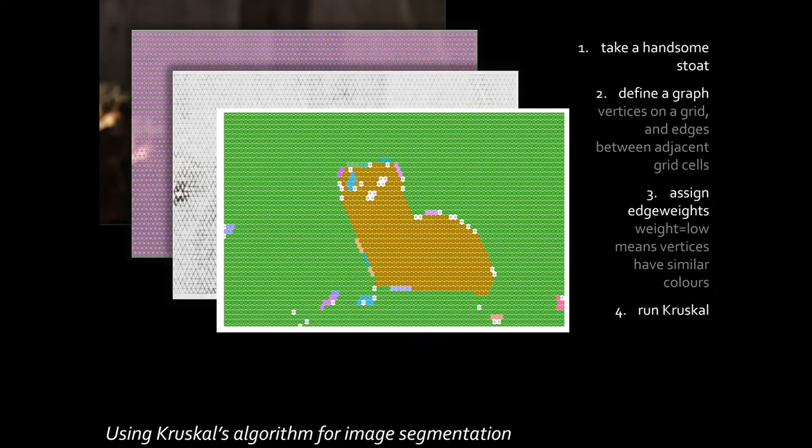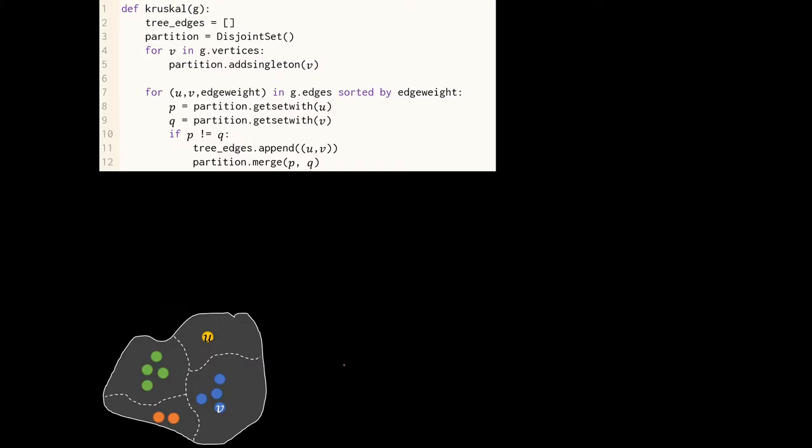So what does the code behind Kruskal's algorithm look like and what data structure does it need? Here's what the code for Kruskal's algorithm looks like. The key steps are in this inner loop here. What we do repeatedly is we pick an edge joining two vertices. Let's suppose that we've decided to pick an edge from vertex U to vertex V.